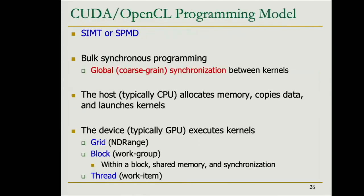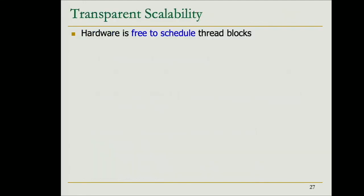Key terminology: in CUDA a 'grid' is the total set of blocks running a kernel; in OpenCL it's an NDRange. A 'block' (or work group in OpenCL) is a set of threads running on the same GPU core. Within a block, threads can share data using on-chip shared memory and can synchronize locally. These are the local synchronization primitives, as opposed to the global synchronization that requires kernel termination.